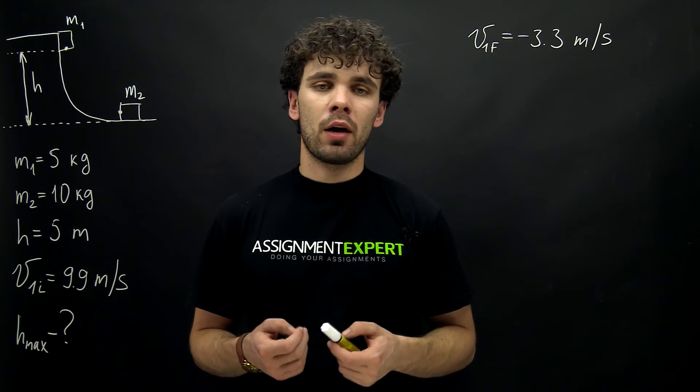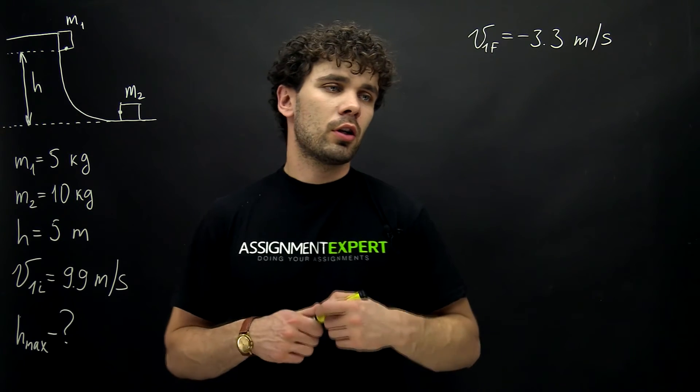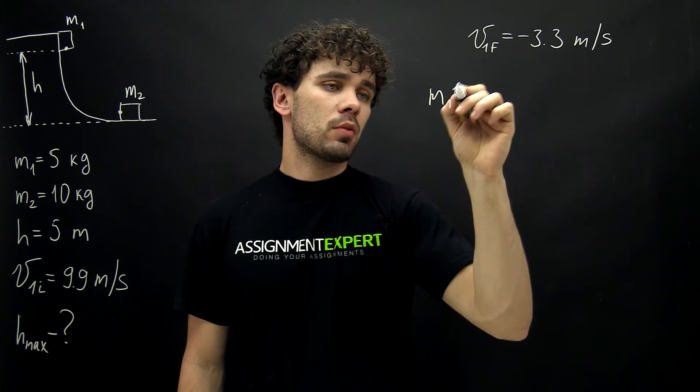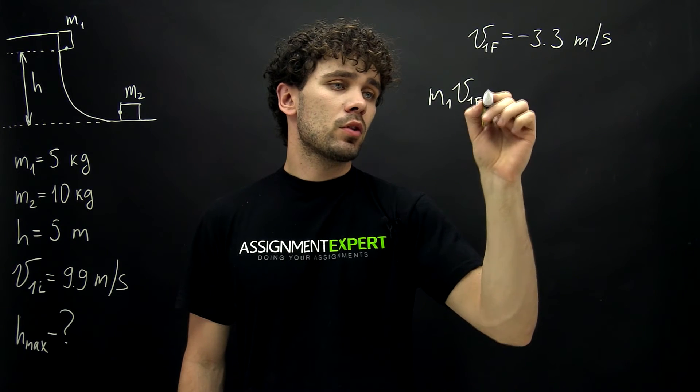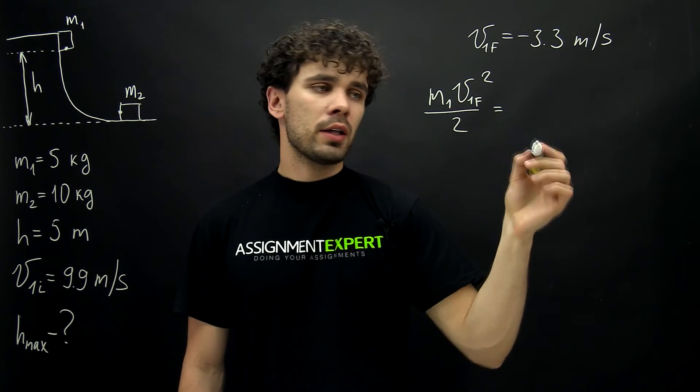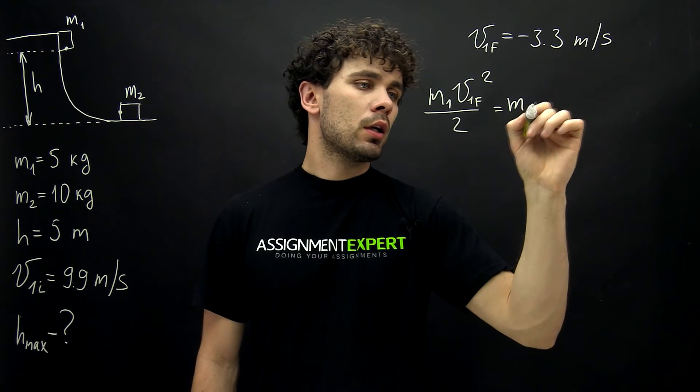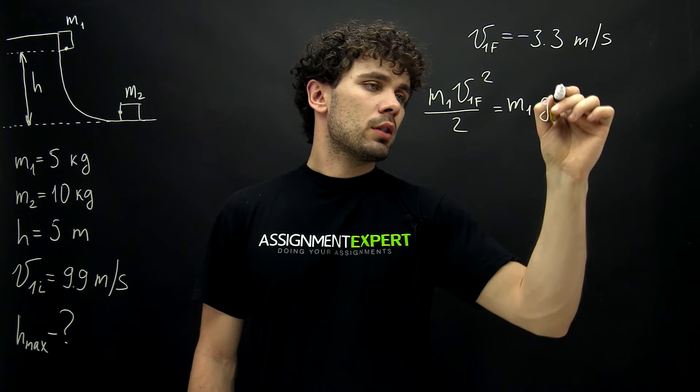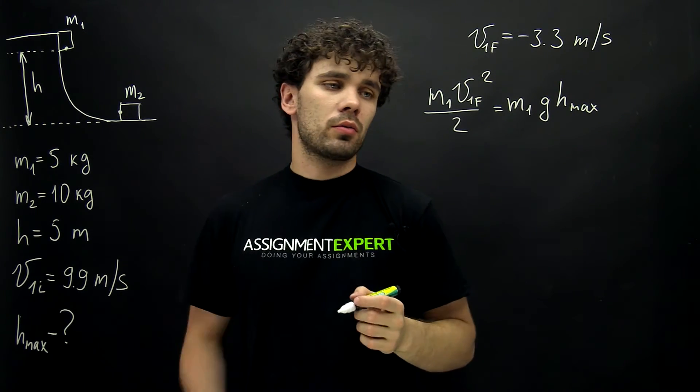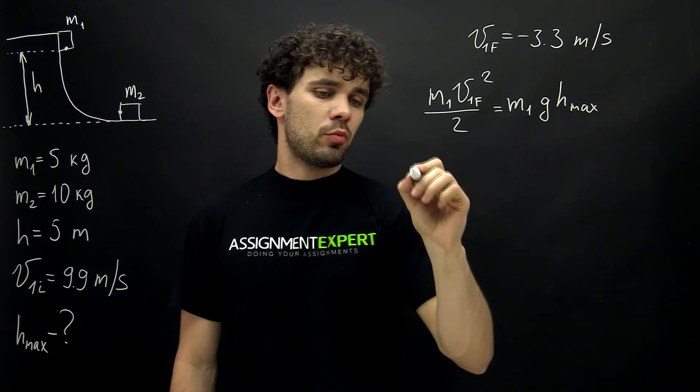For that we will again apply the law of conservation of energy. In this case we have m1 times v1 final squared over 2. And on the right side we have m1 times g times h max, the height at which the block rises. From here we derive h max.